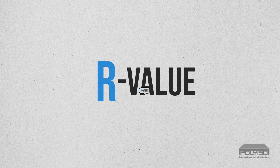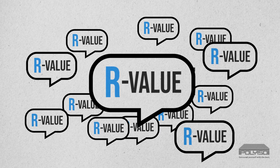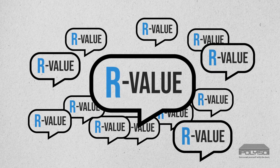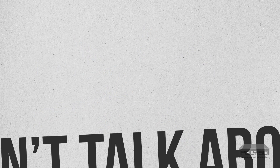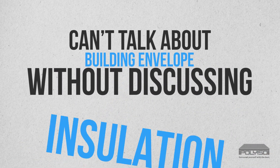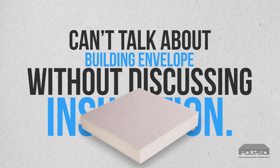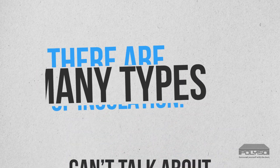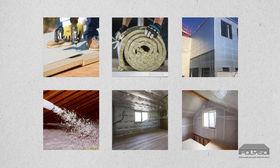Thermal resistance, or R-value, is an important and frequently used term when talking about the energy efficiency performance of building envelope materials. And you cannot talk about the building envelope without discussing insulation. There are many types of insulation, each with unique qualities that make them appropriate choices in different applications.